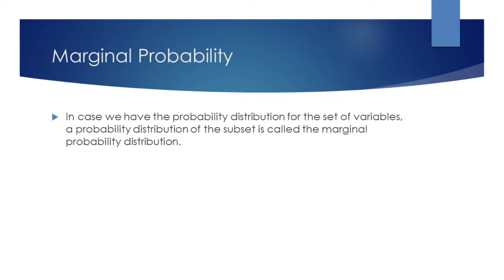In case we have the probability distribution for the set of variables, a probability distribution of the subset is called the marginal probability distribution.